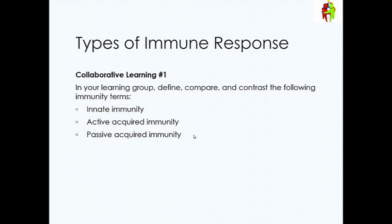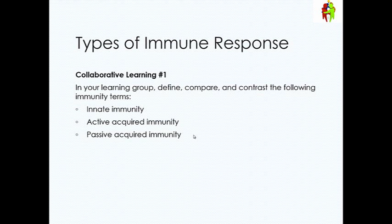Active acquired immunity is any time that your body develops immunity after being exposed to an infection. Each time your body is exposed to an infection, it remembers that pathogen a little more quickly than the last time. Similar to a group of soldiers that have encountered an enemy force — the first time they encounter them, they may not recognize them as an enemy or know their strengths and weaknesses, but the next time they'll have the benefit of experience and do better.